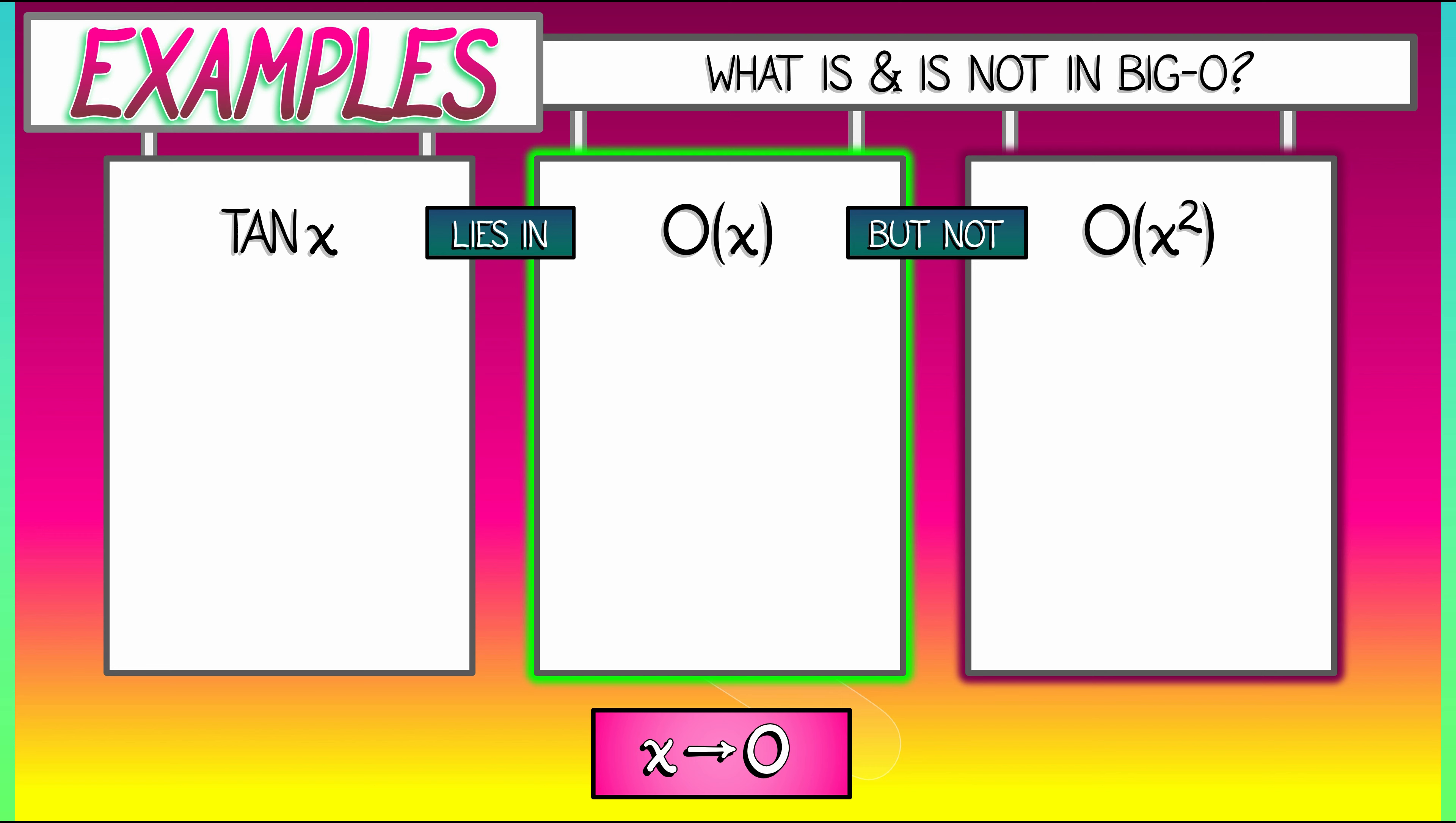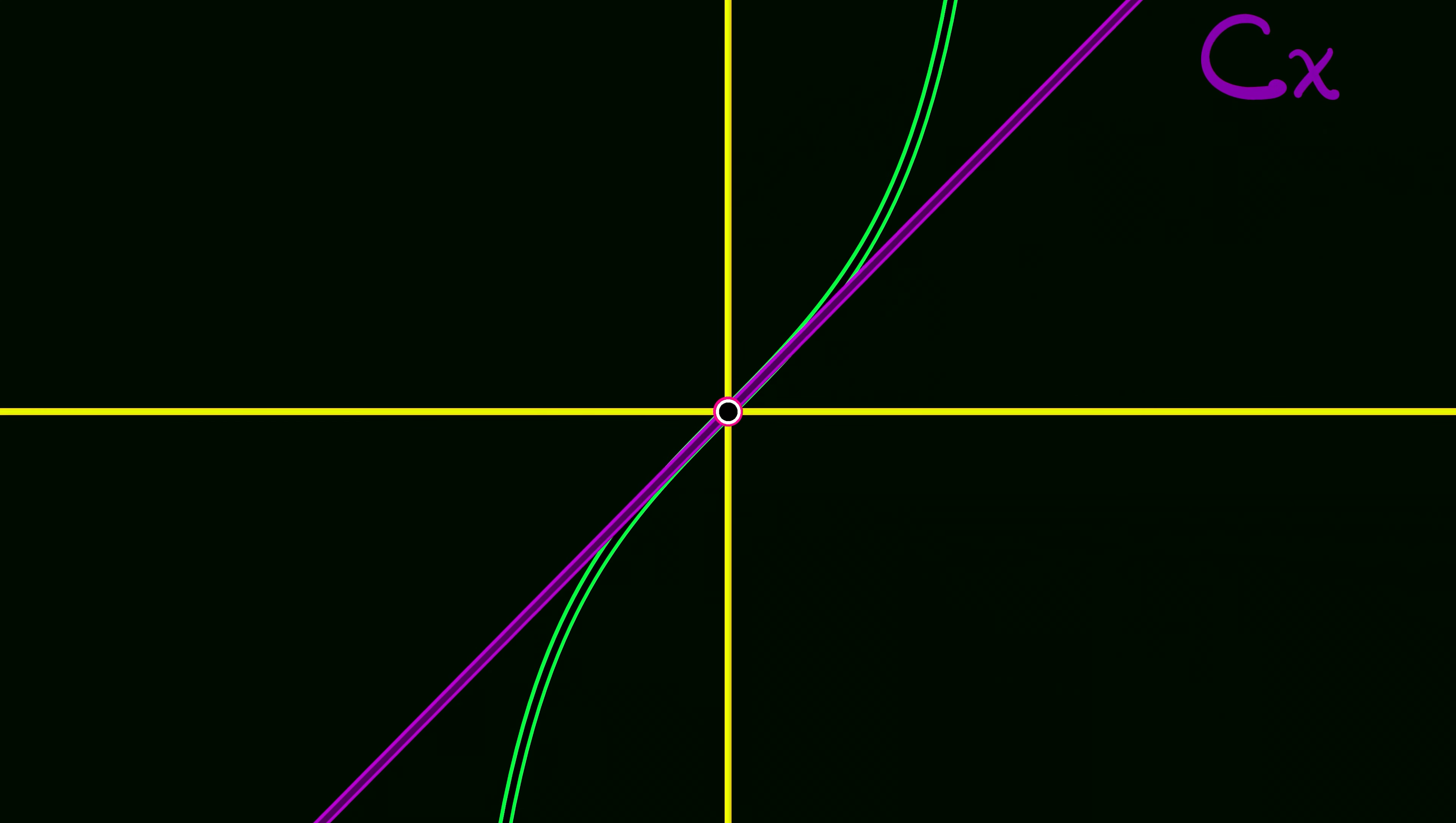Well, is tangent of x less than x, or some constant times x? If we draw the graph, zoom in real close to where x equals zero, yeah, that works. And we can even choose a constant close to one. But who cares? Make that constant like 10 or something like that. All we need is for that inequality to be satisfied.